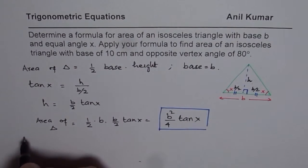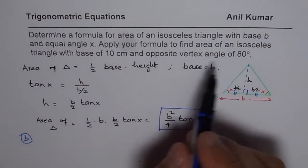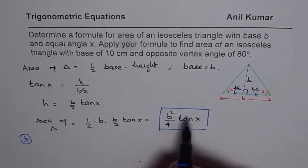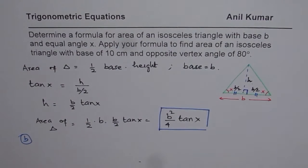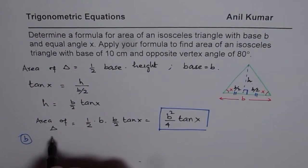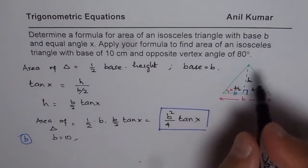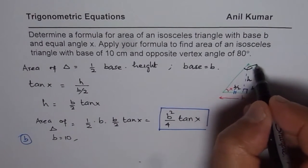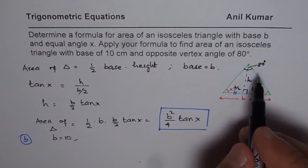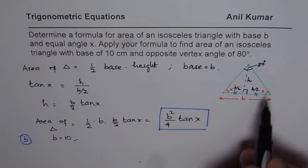Now in part B, what we are given here is that base b is equal to 10. So we will substitute 10 for b. So we know base equals to 10. And the vertex angle opposite is 80. So this angle is given to us as 80 degrees. Now if that is 80 degrees, how much is x?